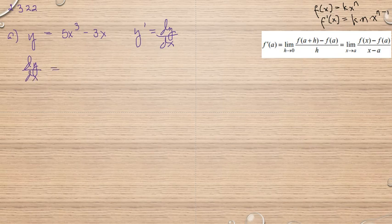Så har vi 5 gånger 3x of 1 till 2, so we have 3. Så har vi 15x of 1 till 2, så tar jag med 3.